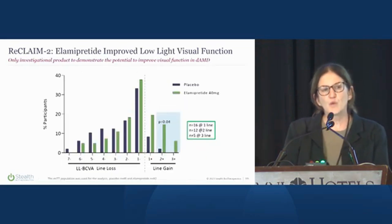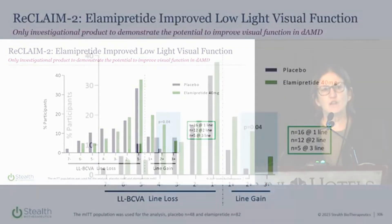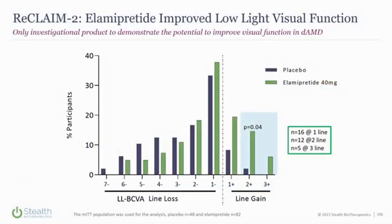We also saw improvement in categorical low-light visual acuity for patients, and the changes in vision were closely associated with the changes in ellipsoid zone integrity over time. Seeing actual improvement in vision is certainly important for patients in this disease.